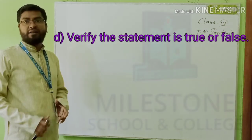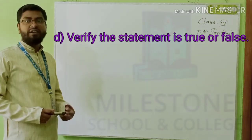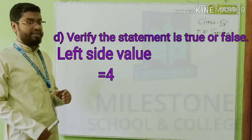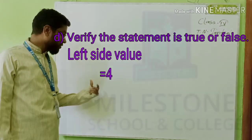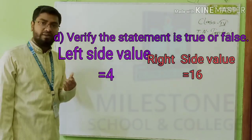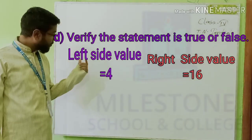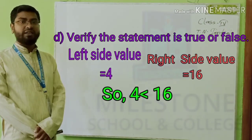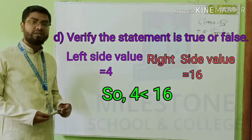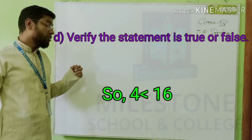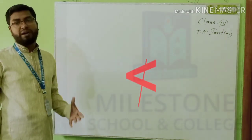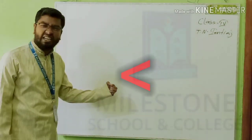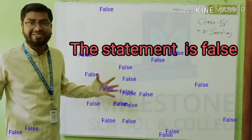D number question: verify the statement — is it true or false? Left side value is 4, right side value is 16. So 4 is smaller than 16. But in our question, the relation symbol used is not less than. But we found that it is less than. So we can say the statement is false.